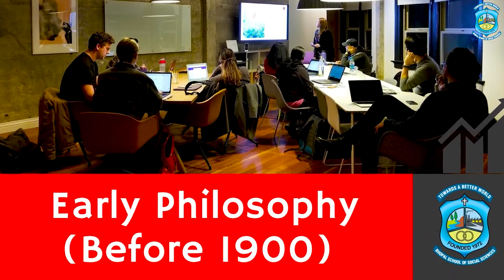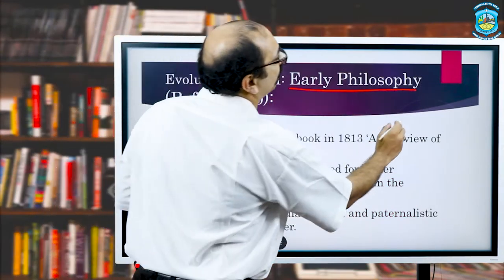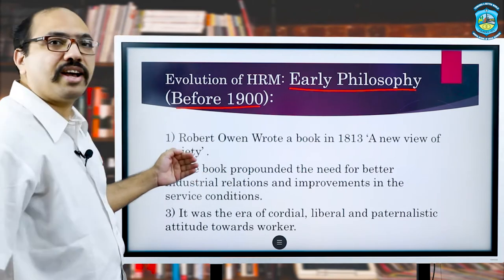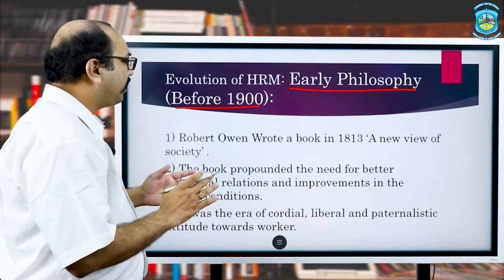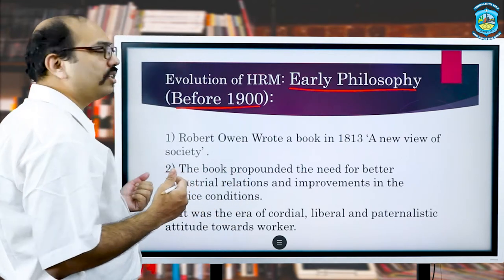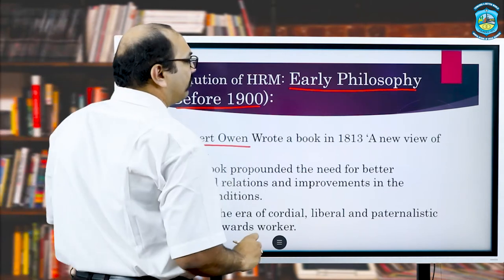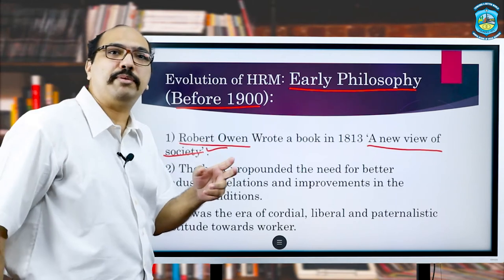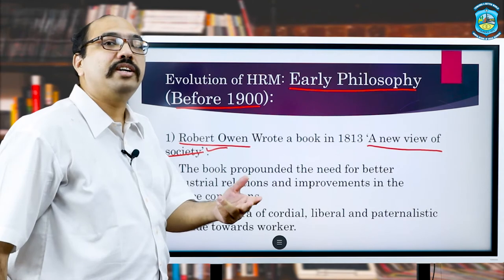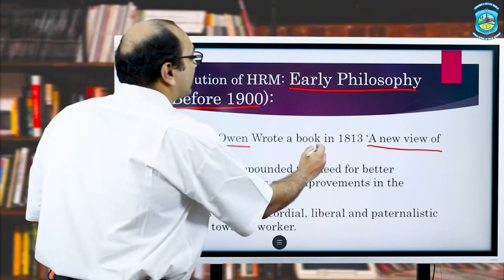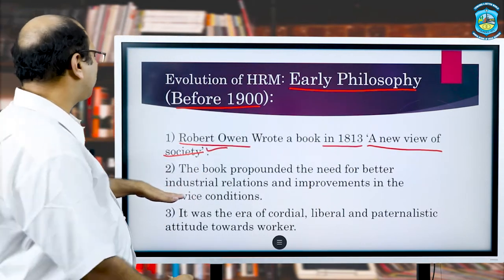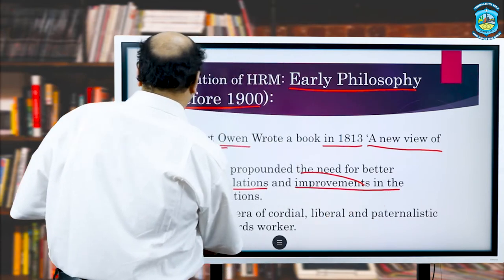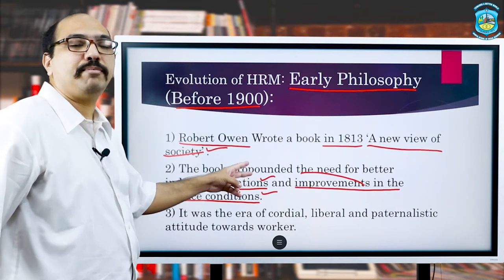The first period is early philosophy, covering all time up to 1900. The main highlight of this period is the philosophical grounding of HRM development — specifically the book by Robert Owen titled 'A New View of Society,' written in 1813. This book talks about the need for better industrial relations and improvements in service conditions.